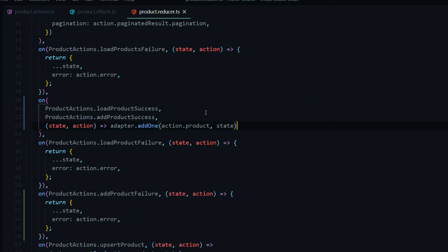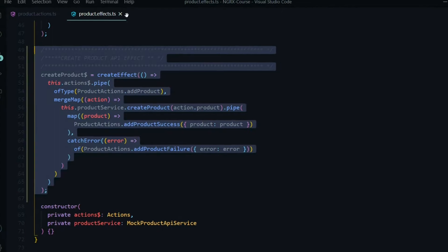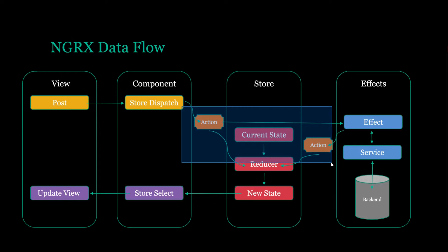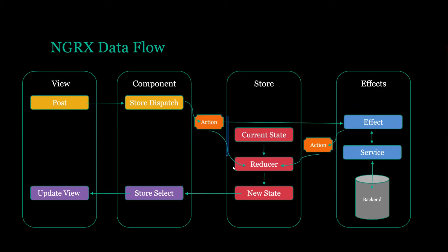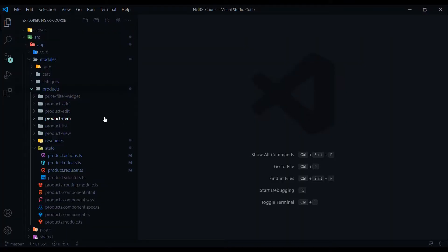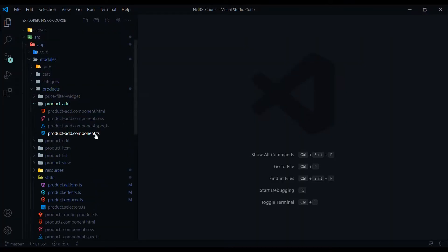We've assembled all our pieces — actions, a new effect, and an updated store. Now we're ready to dispatch our action. We'll open up the add product component and dispatch our action. We'll also need to create a few side effects for alerting the user on success or failure. Let's open up the component from inside product add, open the TS file, and also open our effects inside the global store.